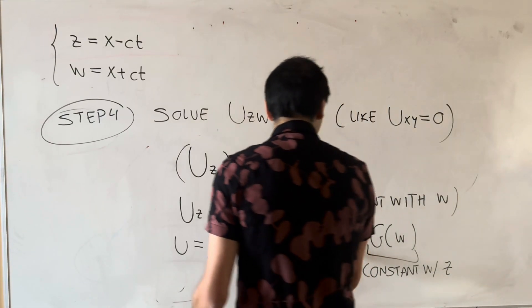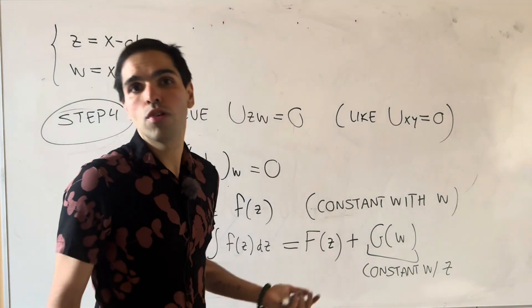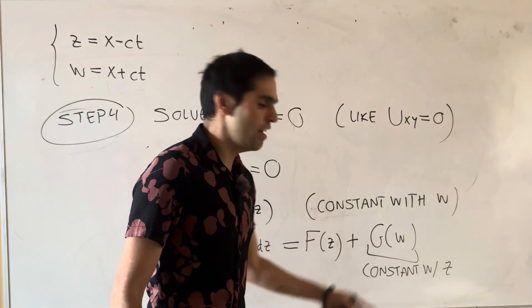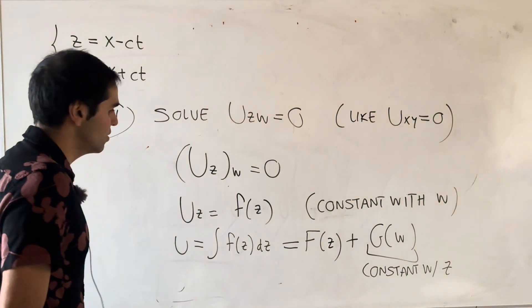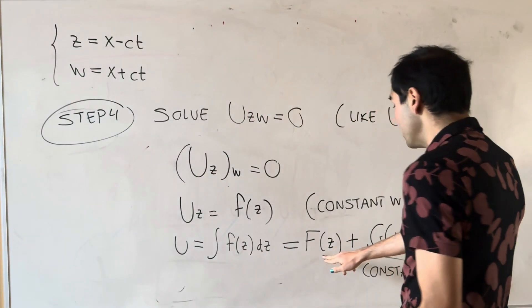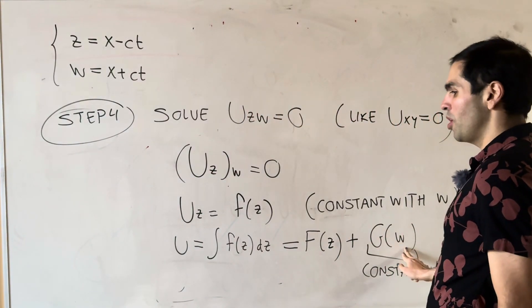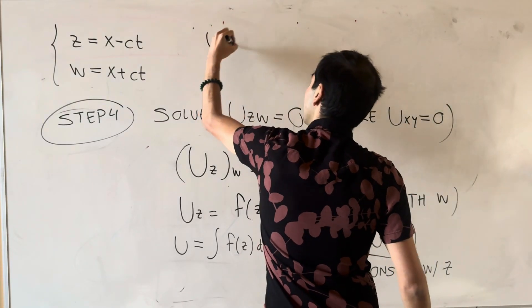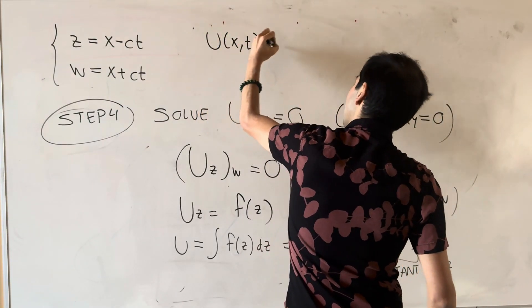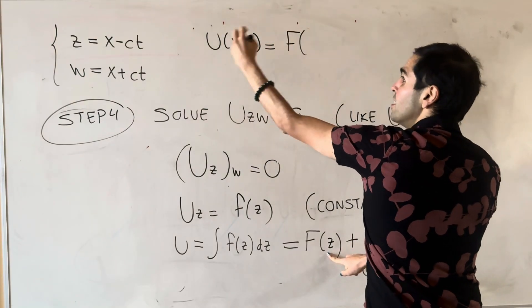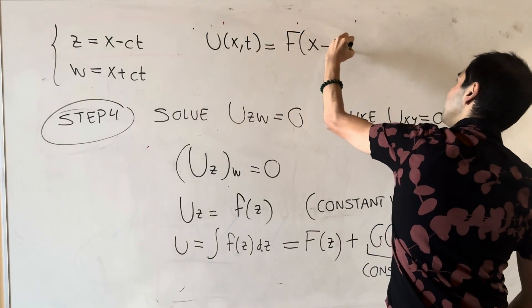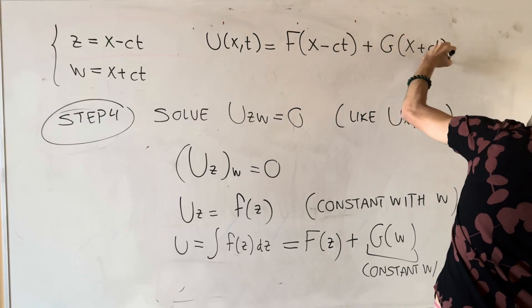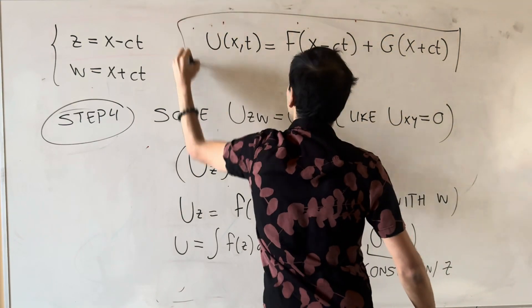And why did I write capital G instead of lowercase z? Just to be pretty, because we already have capital F. So why not just add capital G? And then last but not least, so this is in terms of z and w. So we just need to write this in terms of our original variables. And in the end, what we get is u of xt. It's F of z, where z was x minus ct. And then G of w, which is G of x plus ct.